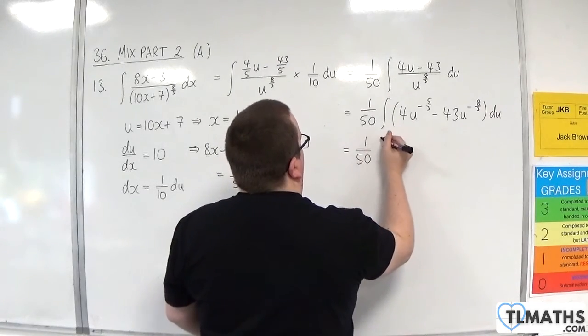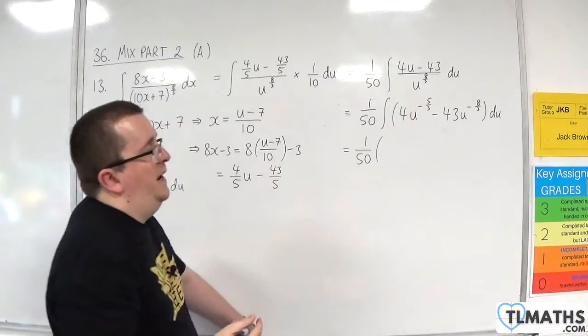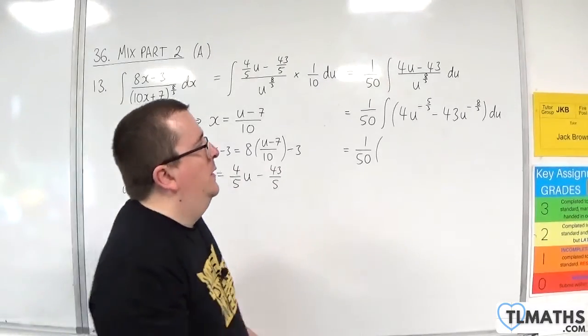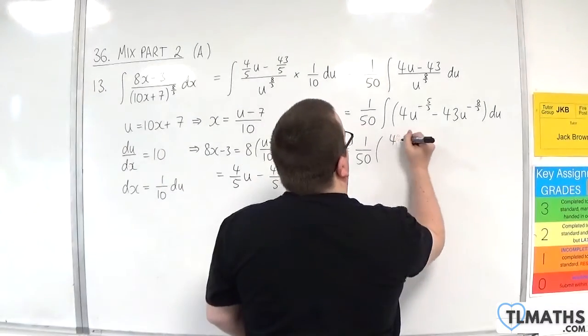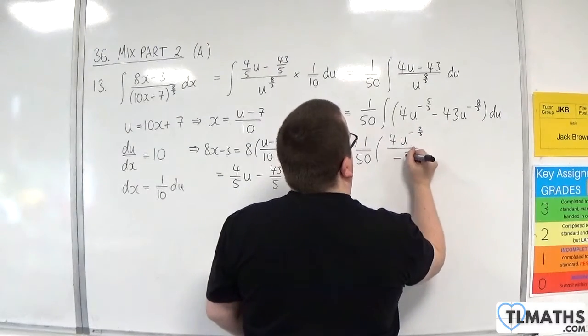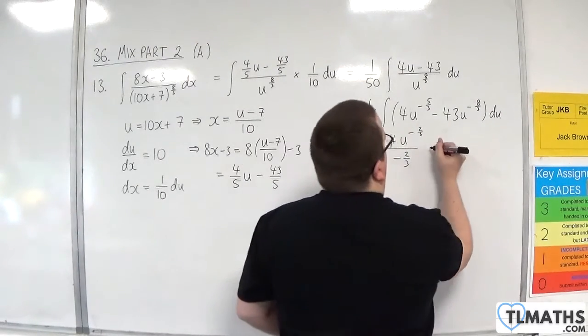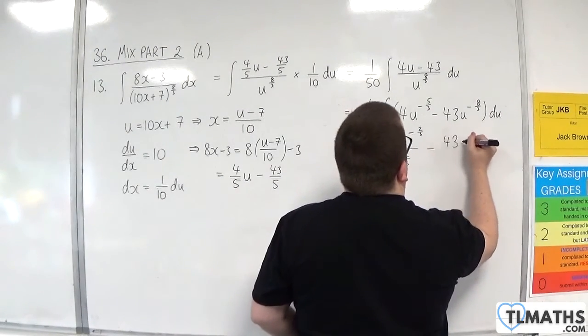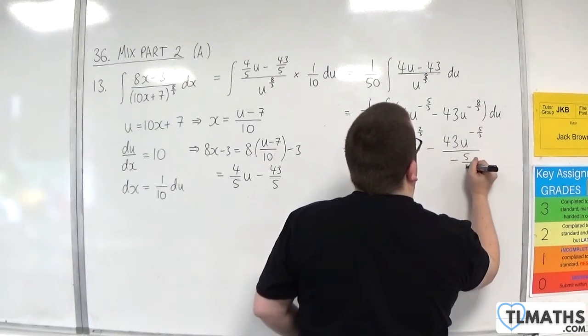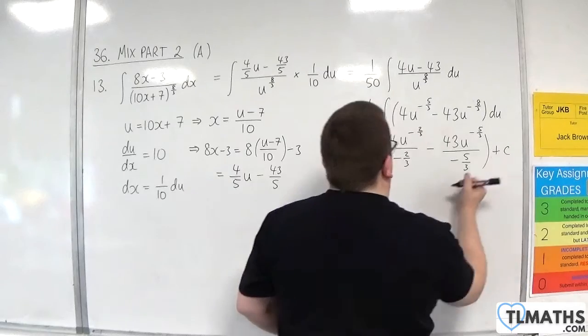So 1 over 50 times. Now we're going to integrate, add 1 to the power, divide by the new power. So we'll have 4u to the minus 2 thirds divided by minus 2 thirds. Then take away 43u to the minus 5 thirds over minus 5 thirds, plus c.